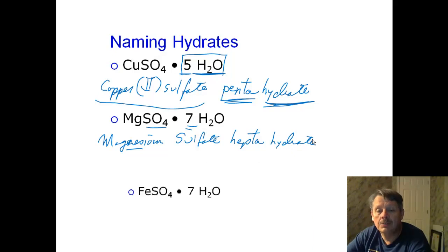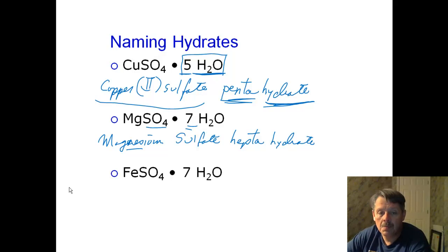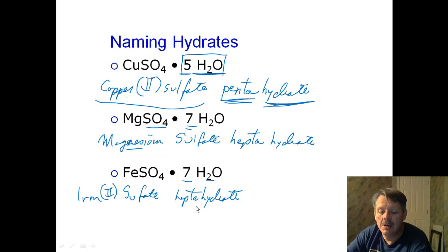Go ahead and give the next one. Try that on your own. This is iron, and it's sulfate. And sulfate takes on a two-minus charge, which means iron needs to take on a two-plus charge. So that's iron(II) sulfate. And again, we have heptahydrate. See how all this stuff fits together? It all builds.